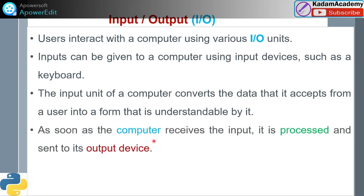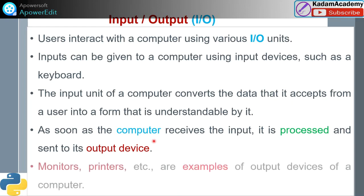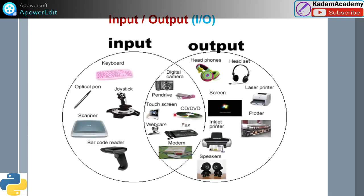As soon as the computer receives the input, it is processed and sent to its output device. Monitors, printers, etc. are examples of output devices. There are also transferring devices, and output devices include printers and monitors.